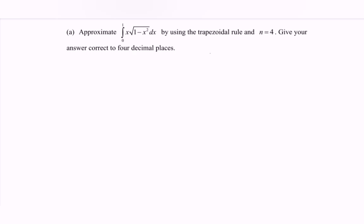First, what we have to do is to find h. So h is equal to 1 minus 0 over n, where n is 4. So h is equal to 1 over 4, or we can say 0.25.